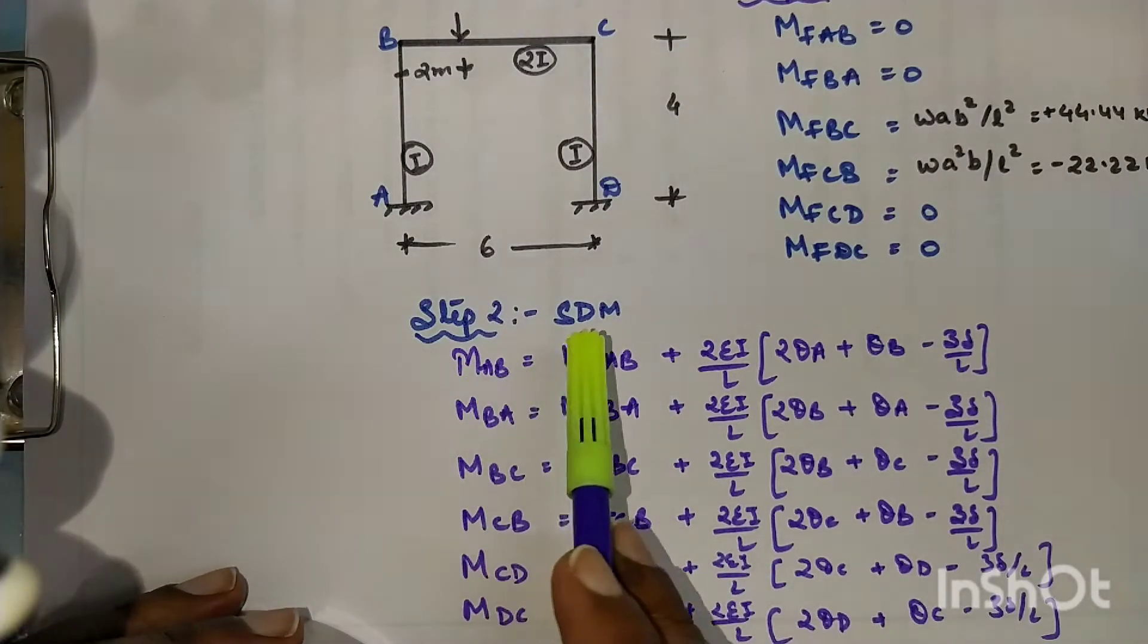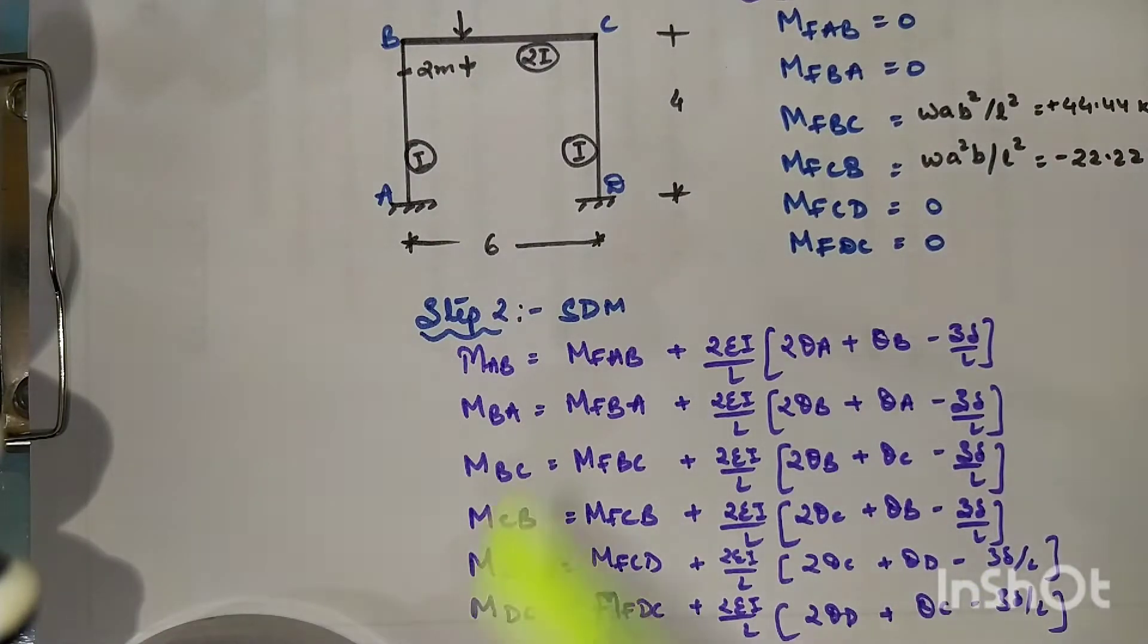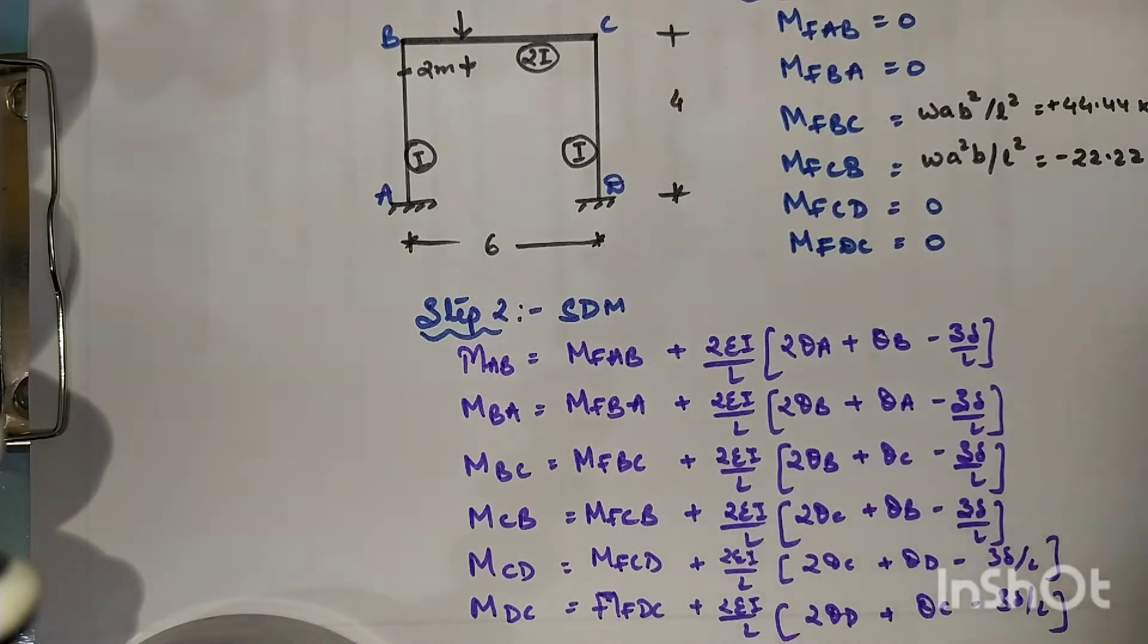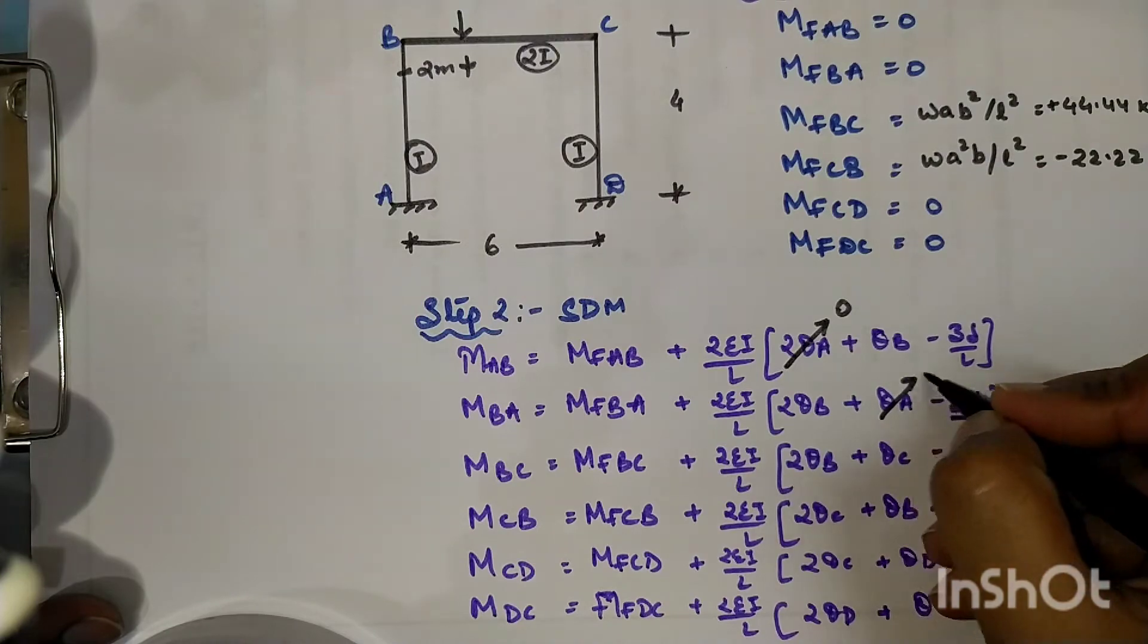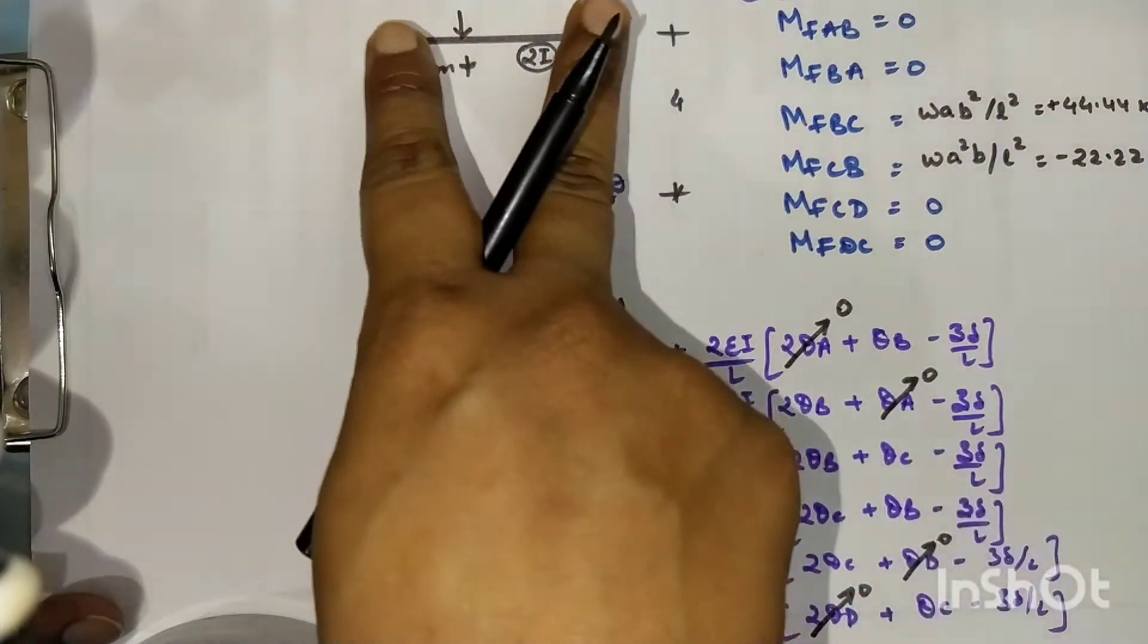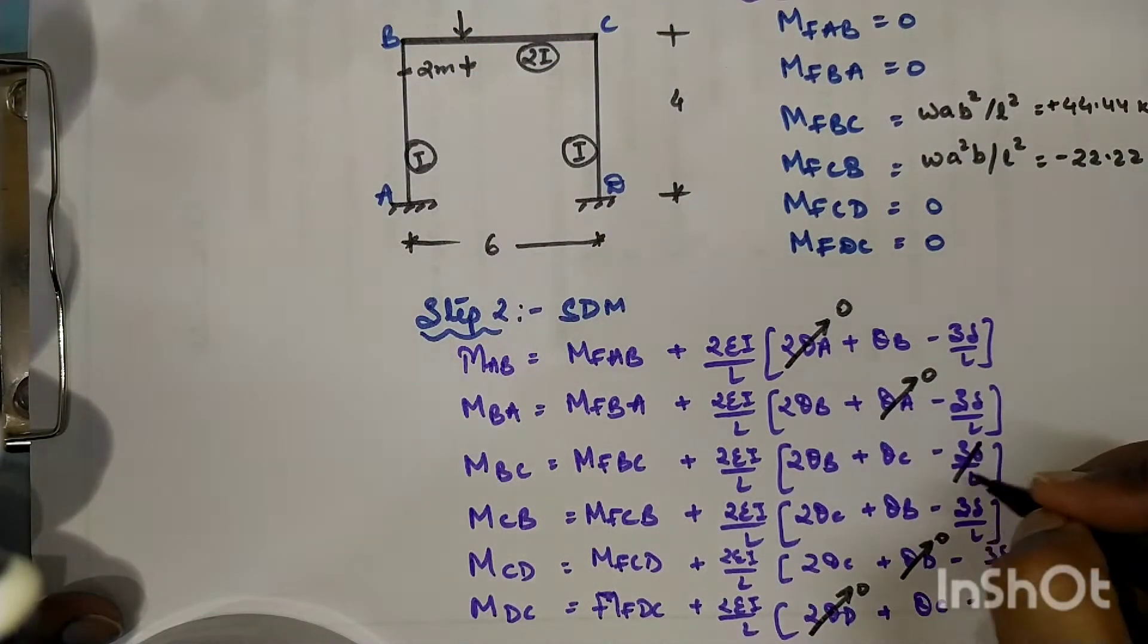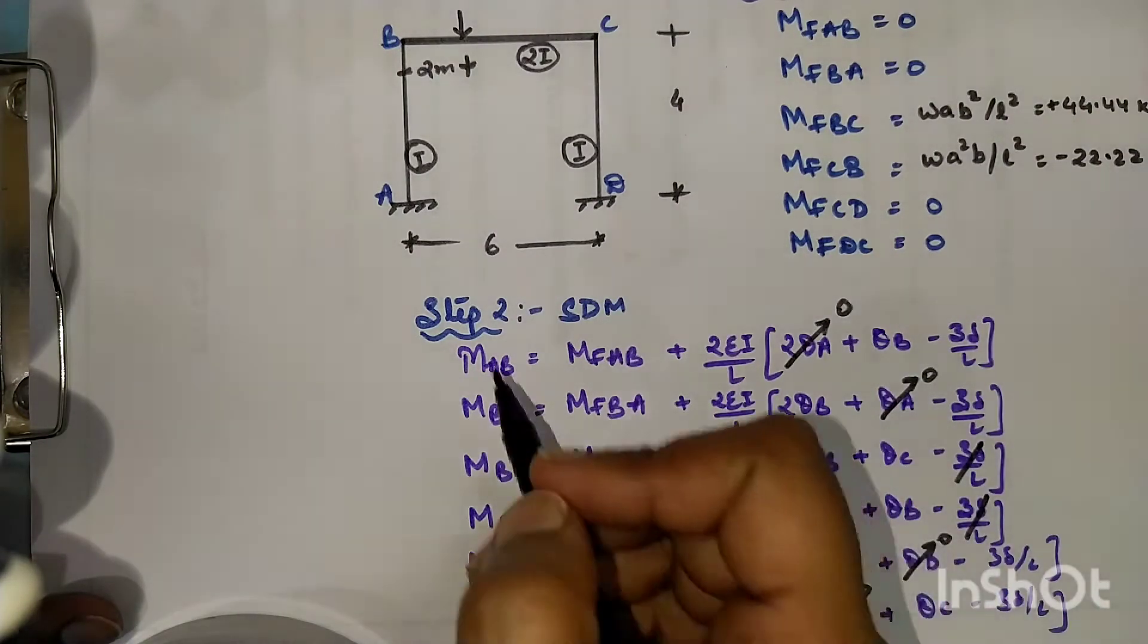Step number two is slope deflection equation. We have written all the slope deflection equations in which A and D are fixed, so slope at A and D will be cancelled to zero. Span BC is not having any deflection, so we will also be cancelling out the delta value in BC equal to zero.